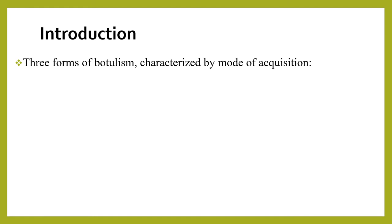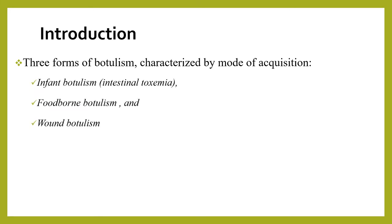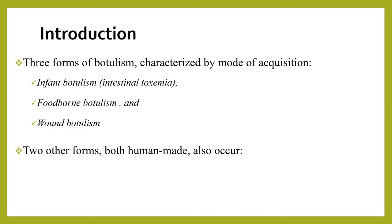Starting from the introduction, there are three naturally occurring forms of human botulism: foodborne botulism, infant botulism, and wound botulism. Two other human-made forms also occur: inhalational botulism, from inhaling accidentally aerosolized toxin, and iatrogenic botulism, from overdosage of botulinum toxin used for therapeutic or cosmetic purposes.